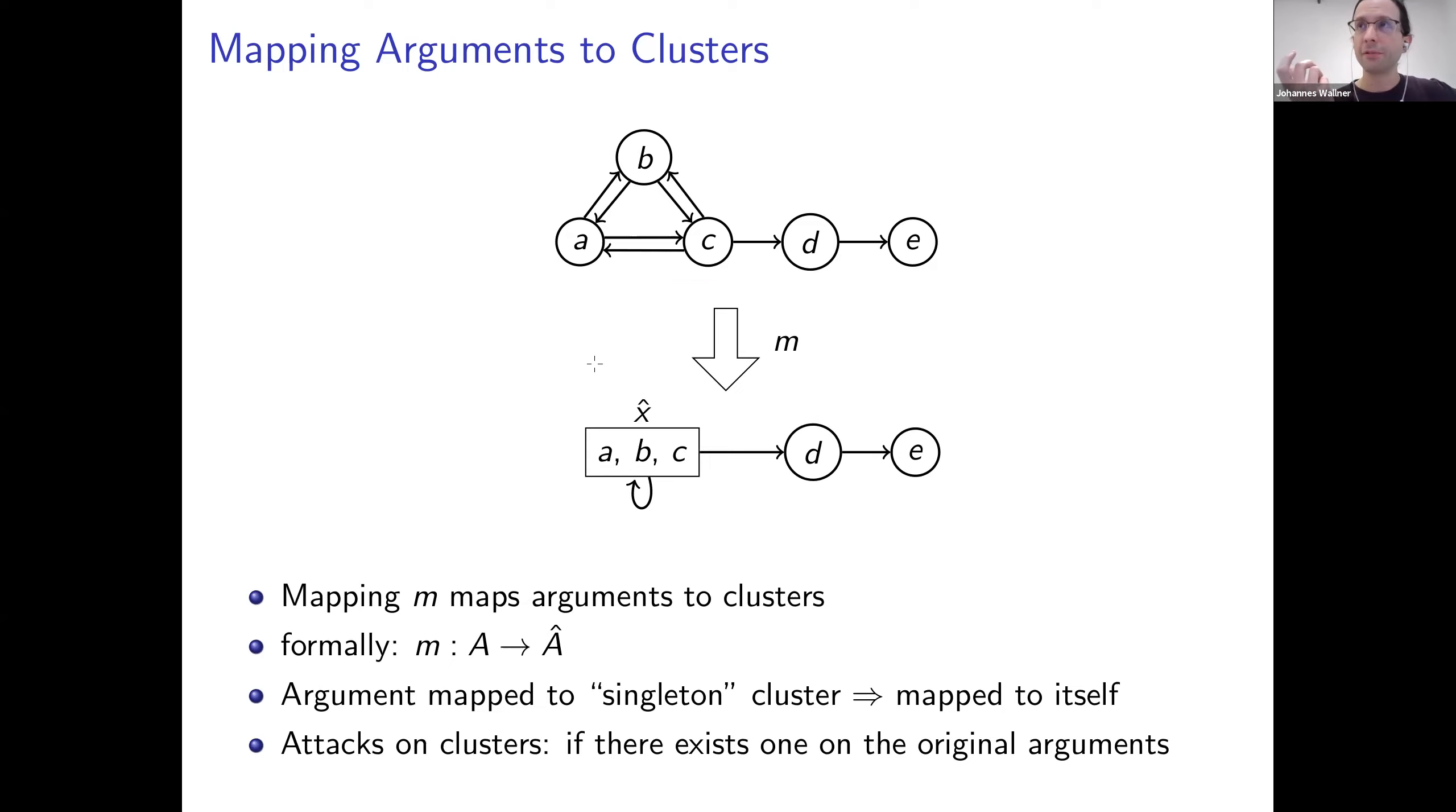And now the existential flavor of the existential abstraction comes into play when considering the attack relation on the resulting clustered argumentation framework. So there is an attack from one cluster here to another cluster here if there exists one argument in the cluster on the left side that attacks one argument in the cluster on the right side. So for instance, here in the original argument, C attacks D. That's why if you apply this mapping here, then the cluster head X attacks the argument D, the singleton cluster D here on the right side.